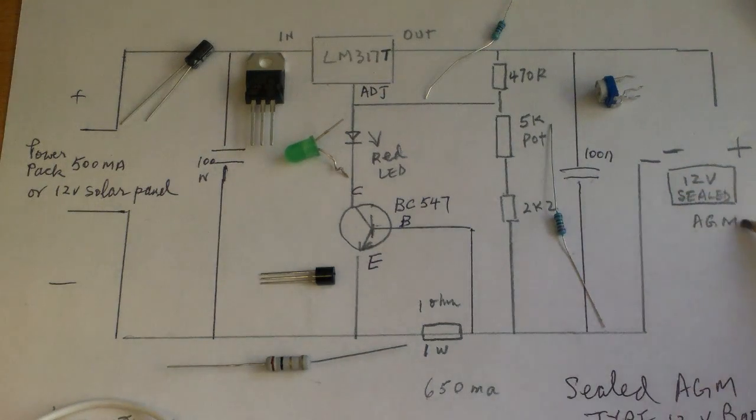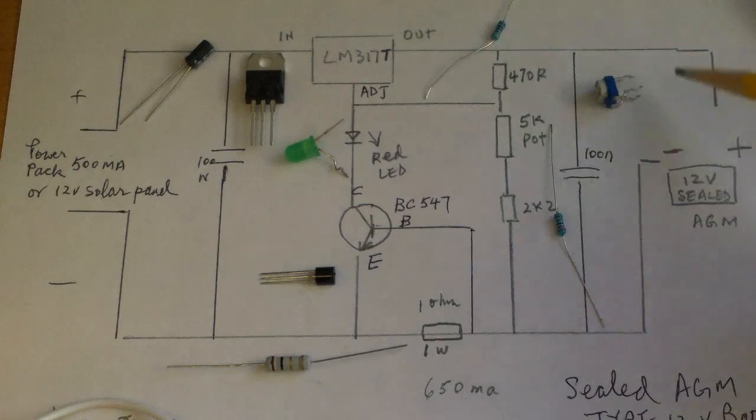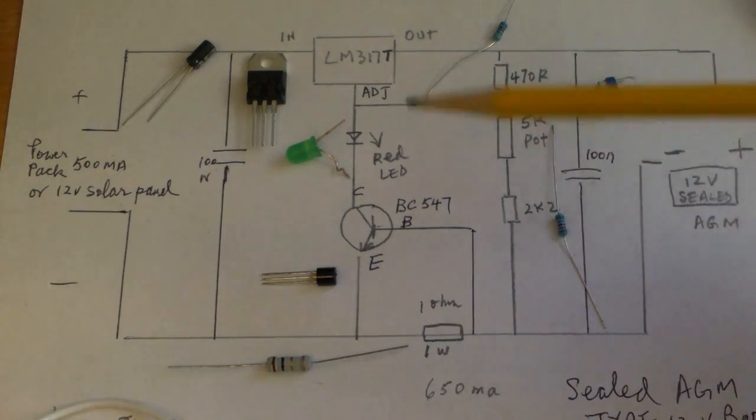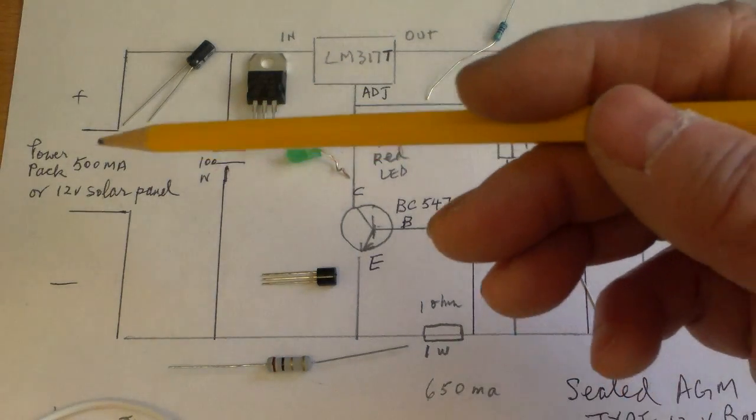And then this end over here, it goes to your AGM or your sealed lead acid battery. This is the negative rail and here's the positive rail. And this is where your input is.